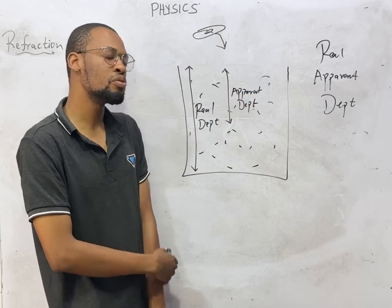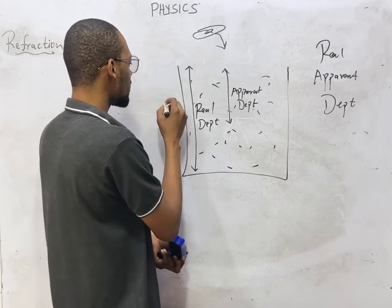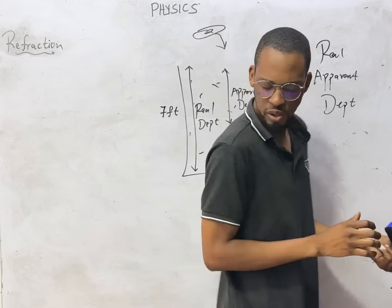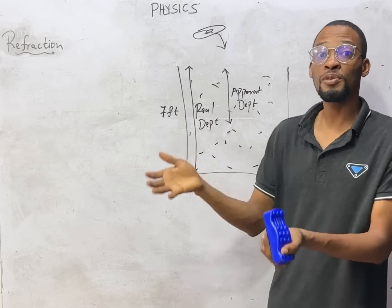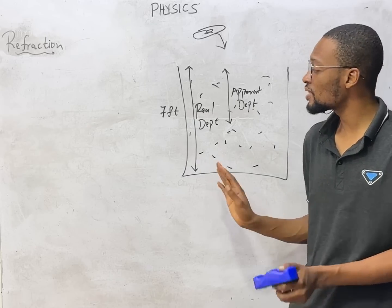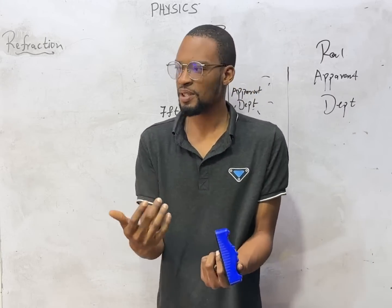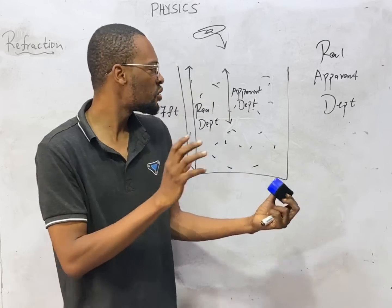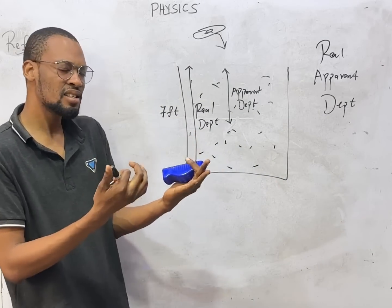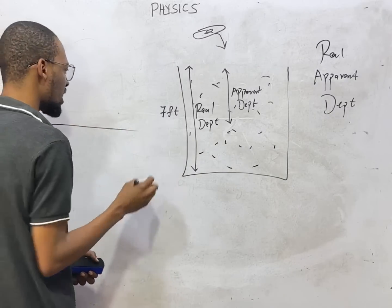In some swimming pools you will see that they write the depth on the side — they can say seven feet — so that you don't just look at it from the top and say you can jump into it. The real depth is the measured depth, the depth measured using instruments. The apparent depth is what your eye is seeing, what appears to be.